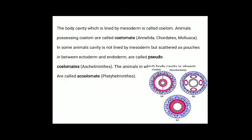Next we discuss coelom. Coelom is the body cavity which is lined by mesoderm. Animals possessing coelom are called coelomates. In some animals, the cavity is not lined by mesoderm but scattered as pouches between ectoderm and endoderm — these are pseudocoelomates. Animals in which body cavity is absent are called acoelomates.